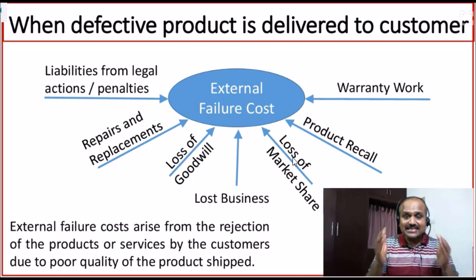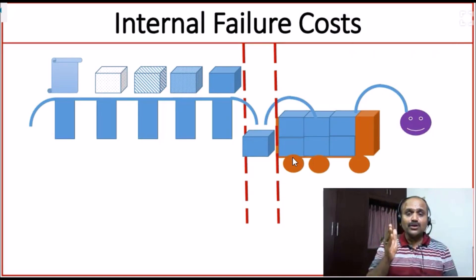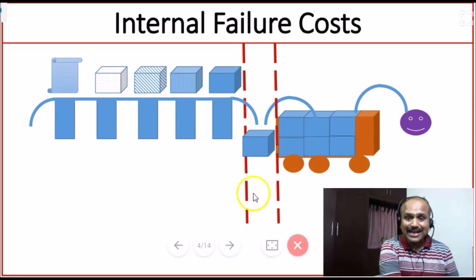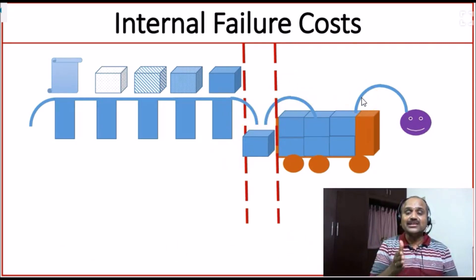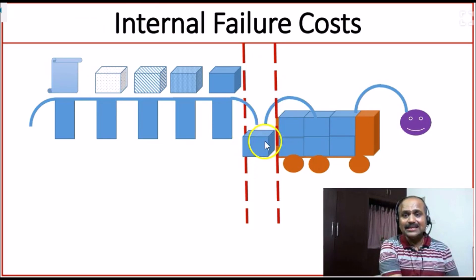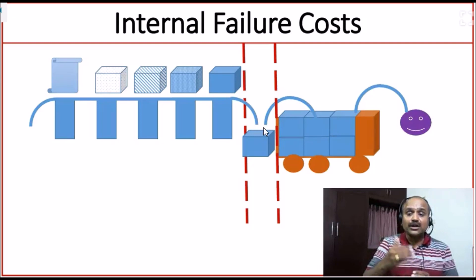Whenever we deliver a defective product to the end customer, it is disastrous. It may lead to more cost and non-tangible things like loss of goodwill and loss of market share. External failure cost is something we cannot afford. Now, if we have to stop external failure cost — that means we don't want to ship a defect to the end customer — we should address it before the product gets shipped. That is called internal failure cost.